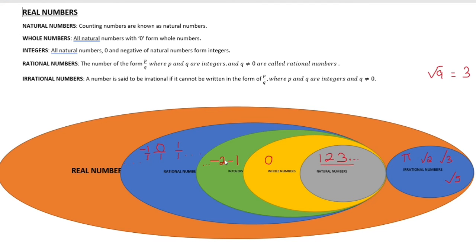Rational Numbers. A number of the form p by q, where p and q are integers and q is not equal to 0, is called a rational number. For a rational number, the numerator is p and the denominator is q.